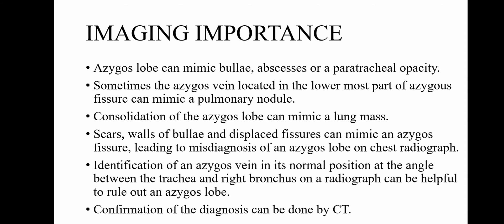The azygous lobe can mimic bullae, abscesses, or a paratracheal opacity. Sometimes the azygous vein, located in the lowermost part of the azygous fissure, can mimic a pulmonary nodule. Consolidation of the azygous lobe can mimic a lung mass. Scars, walls of bullae, and displaced fissures can mimic an azygous fissure, leading to misdiagnosis of an azygous lobe on chest X-ray. Identification of an azygous vein in its normal position at the angle between the trachea and the right bronchus on an X-ray can be helpful to rule out an azygous lobe.